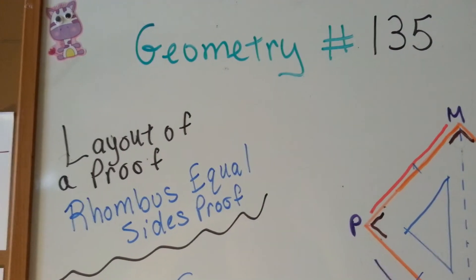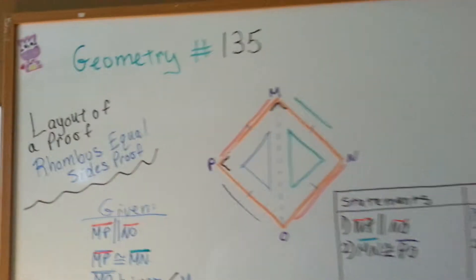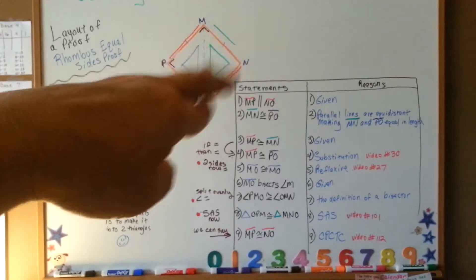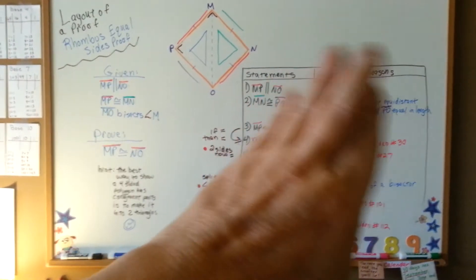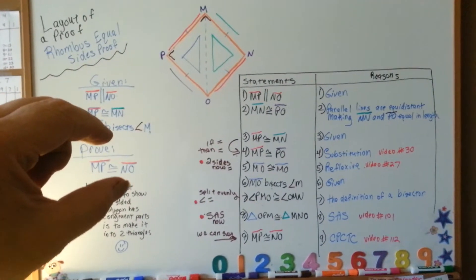Layout of a proof, a rhombus equals sides proof. Just like I always do in every video, I'm going to take a step back so you can see the board. We have our drawing like we should have. We've got our proof table with our statements on the left and our reasons on the right. We have the given and we have the thing we're trying to prove.